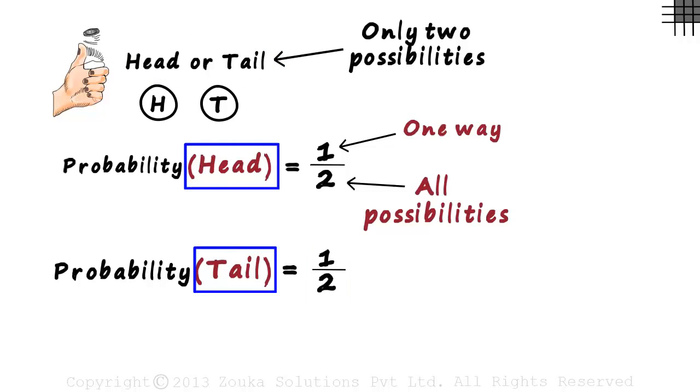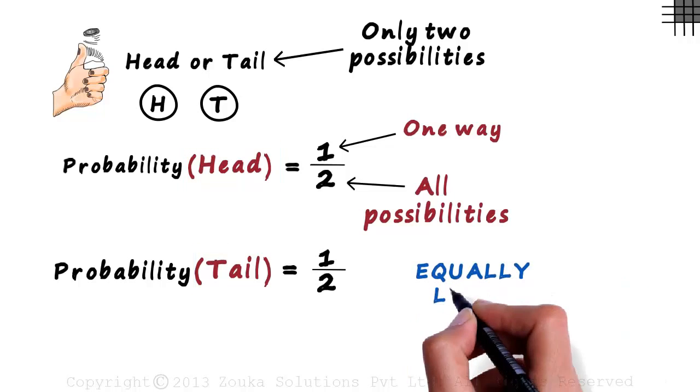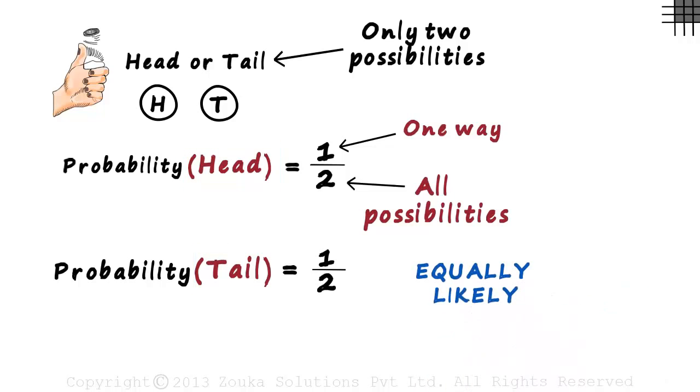Look at these two events, landing a head and landing a tail. Both have the same probability. And since the probability tells us the likelihood of an event occurring, such events are called equally likely events. We say that getting a head or getting a tail at the toss of a coin are equally likely events. That's because their probability of occurrence is the same.